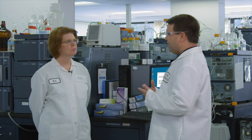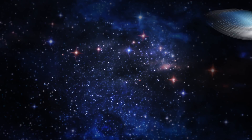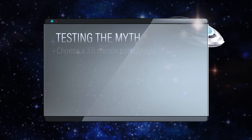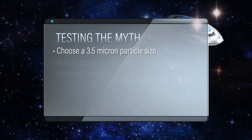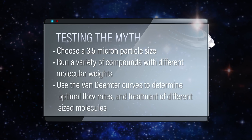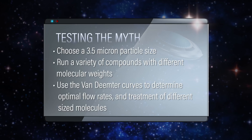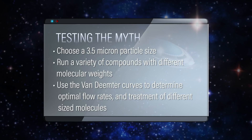I think it might be really important to take a look at some van Deemter curves, because with small molecules you can run pretty fast — up to maybe 800 microliters a minute without losing a lot of efficiency. It'd be nice to know if that holds true for larger molecules. So we can pick a 3.5 micron particle size and run a variety of compounds with different molecular weights, from small to larger, and see what those van Deemter curves look like to find the optimal flow rates.